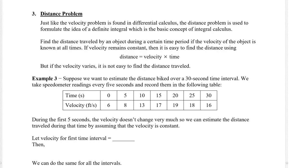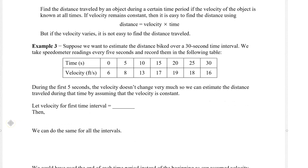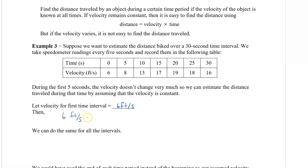Suppose we want to estimate the distance traveled over a 30-second time interval. We take speedometer readings every five seconds and record them in a table. During the first five seconds the velocity doesn't change very much, so we can estimate the distance by assuming constant velocity. We let the velocity for the first interval equal 6 feet per second, giving us 6 feet per second times 5 seconds, which equals 30 feet.